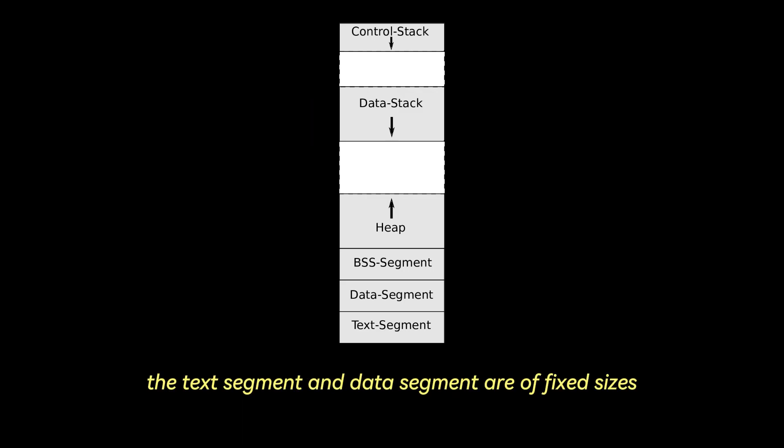Notice how the text segment and data segment are of fixed sizes, while the stack and heap are the two main areas that expand and contract as the program runs, but they grow in opposite directions. This is actually a design choice to prevent them from colliding until absolutely necessary.